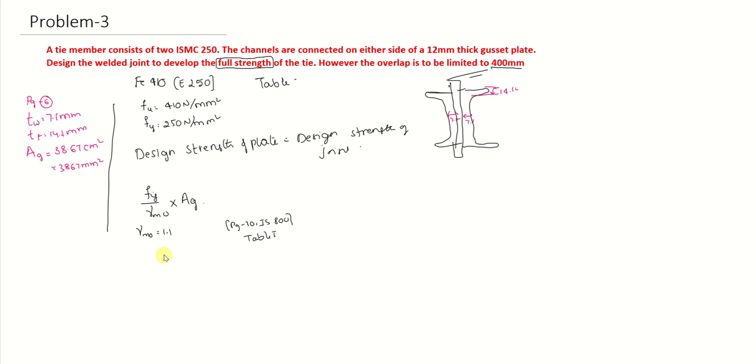Now we can find out: 250 by 1.1 into gross area 3867. The design strength we get is 877,863.63 Newton. We got the design strength of the plate and that should be equated to the design strength of the joint.